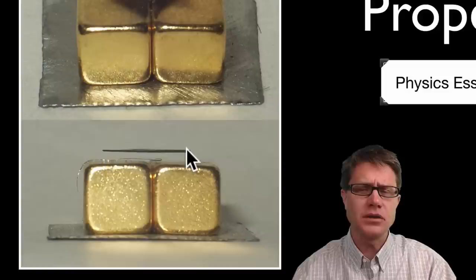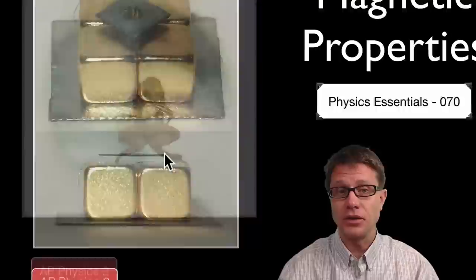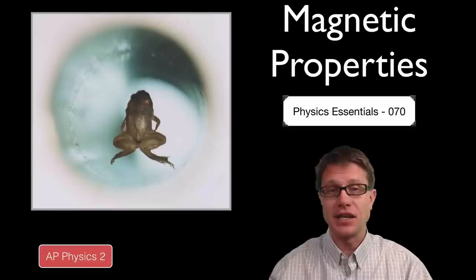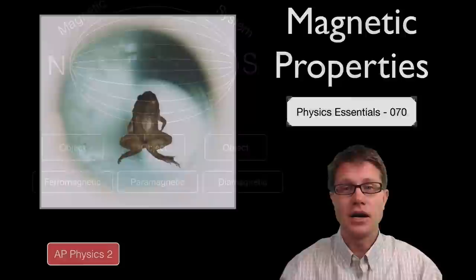Now you are diamagnetic as well. And that means that if we were to put you in a magnetic field like they did with these frogs, you will actually be pushed away by the magnetic field lines and you will actually levitate there. Now they have not done humans yet but they have done frogs and they have done mice. And it is a way that we can kind of study how we respond to weightlessness.